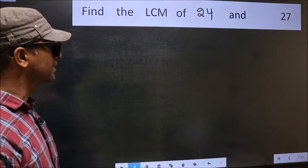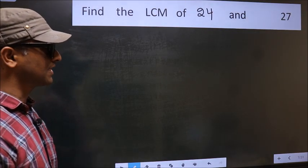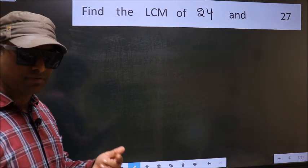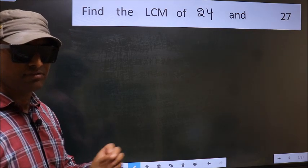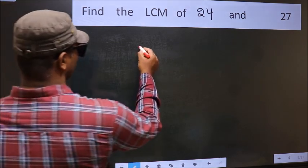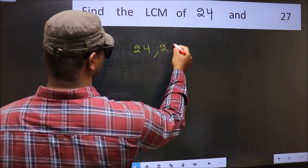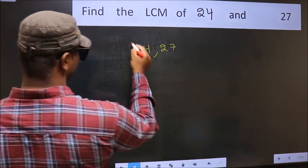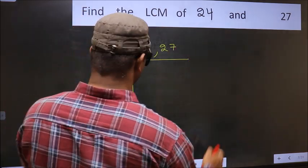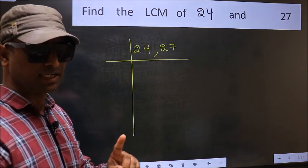Find the LCM of 24 and 27. To find the LCM, we should frame it in this way. Write down 24 and 27. This is your step 1.